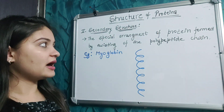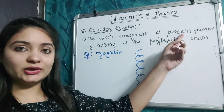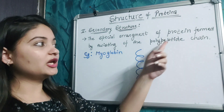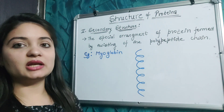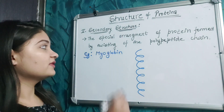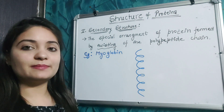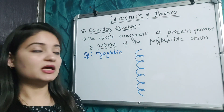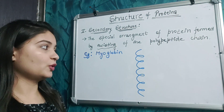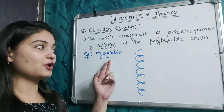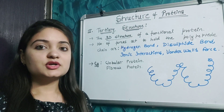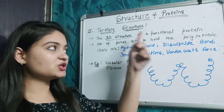The secondary structure of protein is the special arrangement formed by the twisting of the polypeptide chain. An example of the secondary structure of protein is myoglobin.